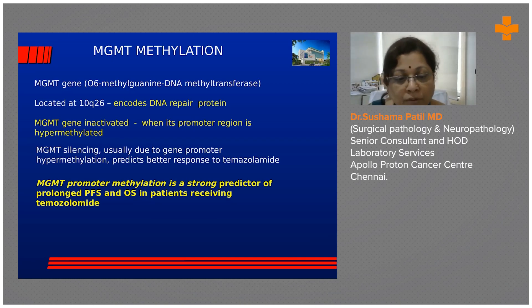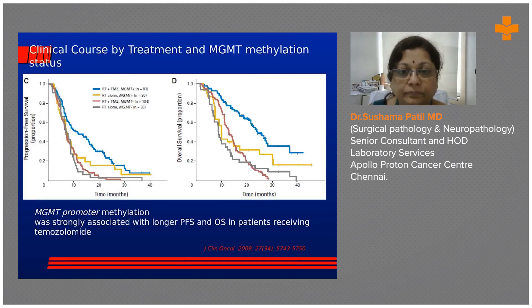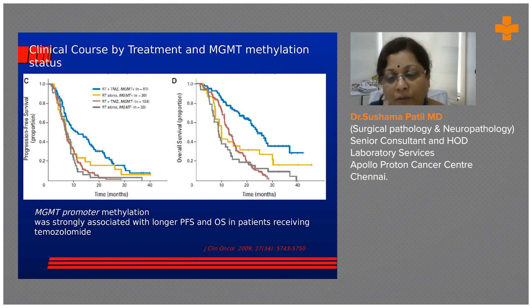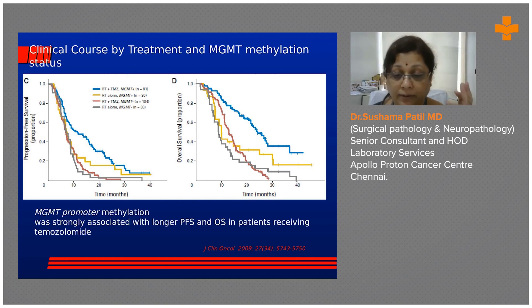Temozolomide is one of the most prominent chemotherapy drugs used in high-grade brain tumors. Clinically it has been shown that patients with MGMT hypermethylation do comparatively well. This survival study — published some time ago but still illustrative — shows the difference in survival curves between MGMT-methylated versus MGMT-unmethylated tumors, with the blue line on top representing the methylated group.